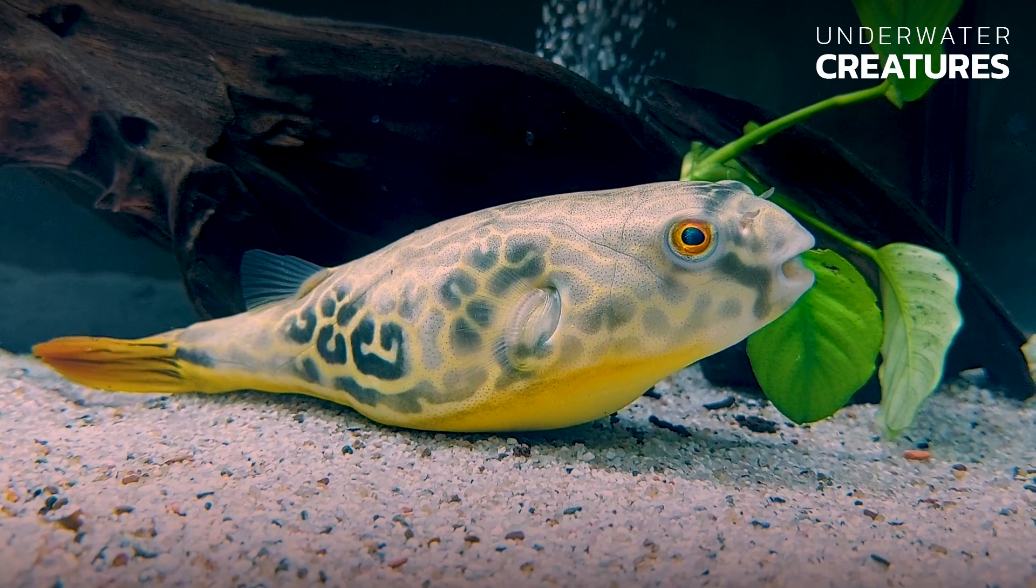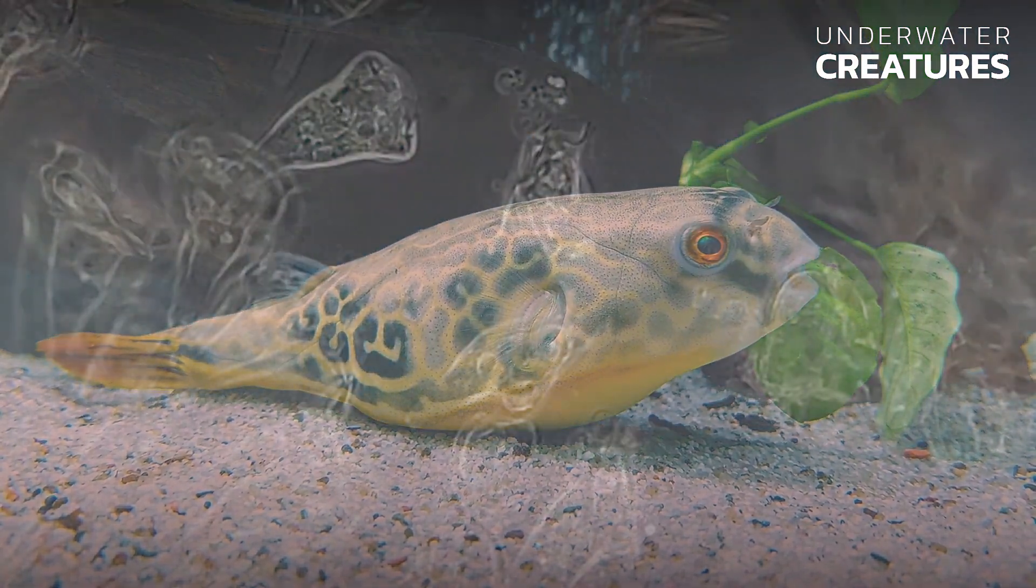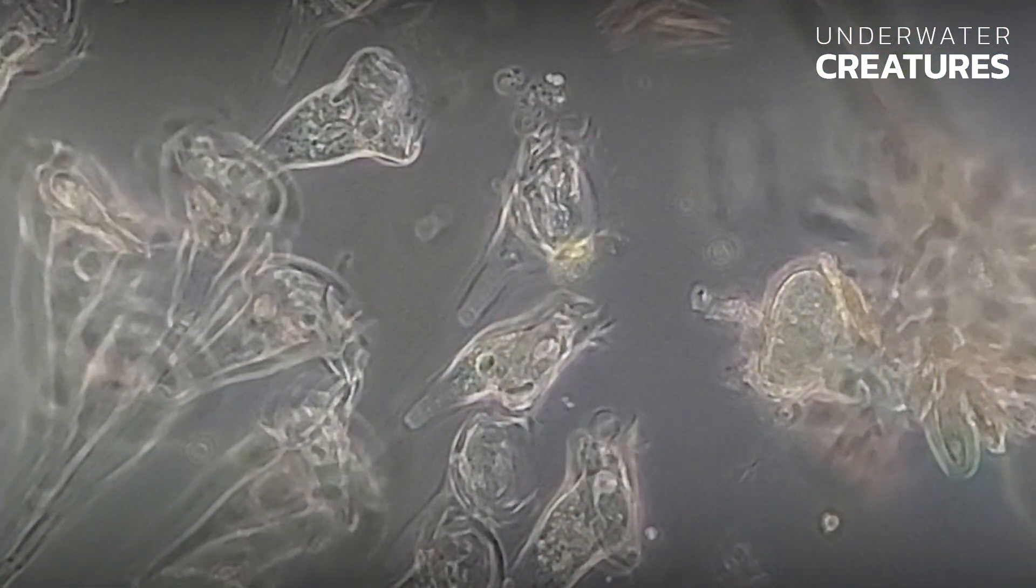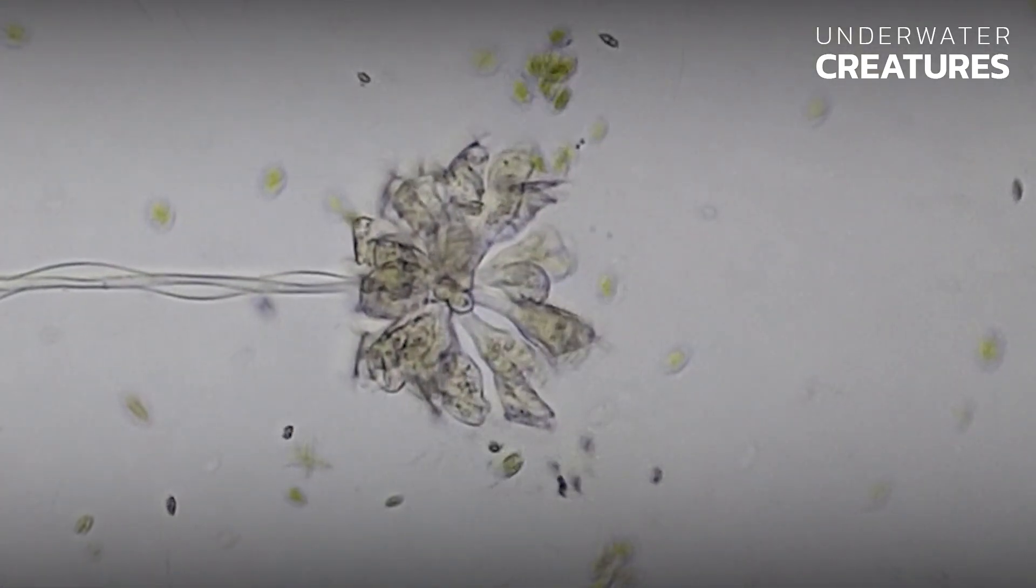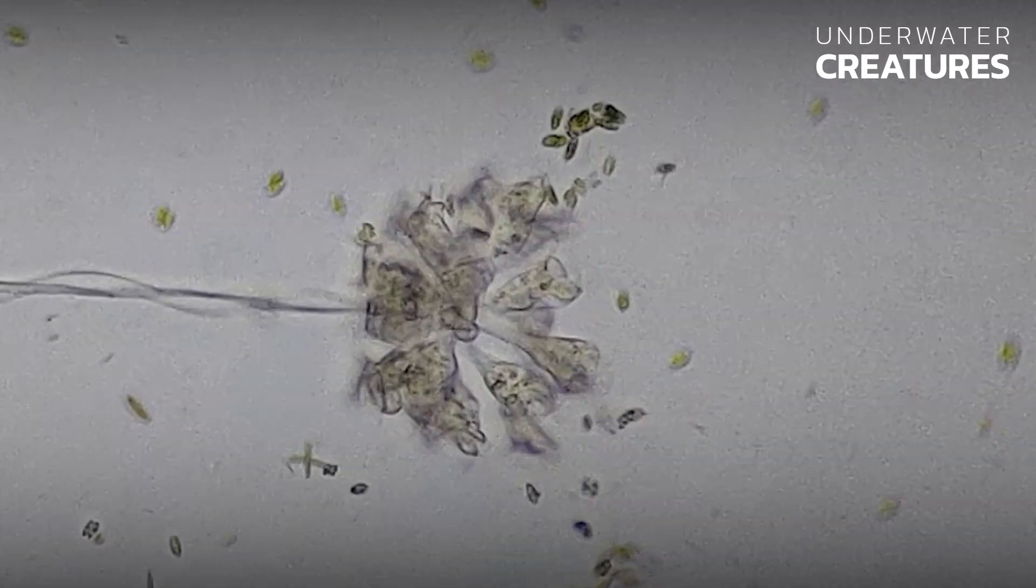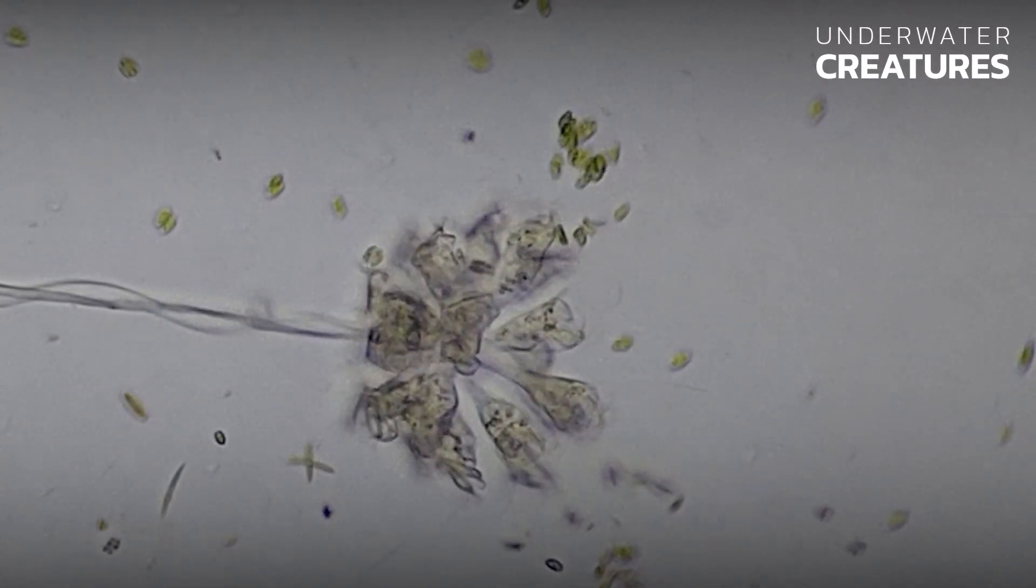Through the movement of the cilia at the opening of the mouth, the peristome, they create a flow of water which sucks tiny organic material like fish feces, food remnants, algae and bacteria towards it.